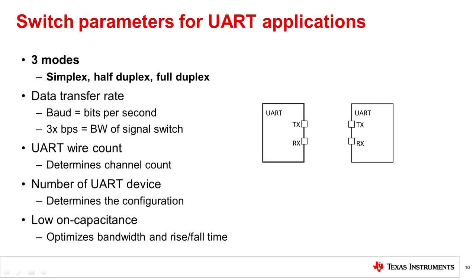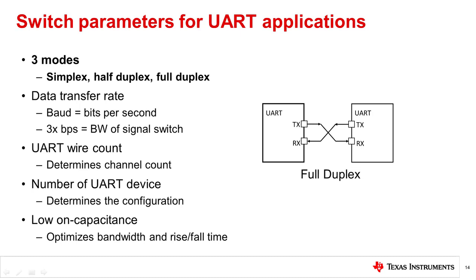When looking for a multiplexer that can handle switching between UART devices, it is important to consider the specifications of the communication protocol and layout between the UART devices. UART data is transmitted serially in one of three modes: simplex, where data is transmitted unidirectionally and independently; half-duplex, where a signal is transmitted bidirectionally but individually; and full-duplex, where data is transmitted bidirectionally and simultaneously.